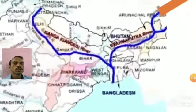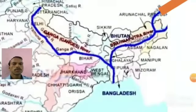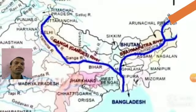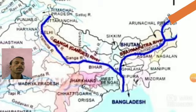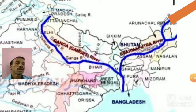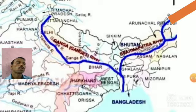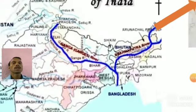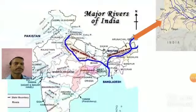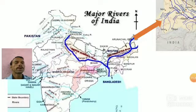The important cities in this region are Allahabad in Uttar Pradesh, Patna in Bihar, and Kolkata in West Bengal. These are some of the major cities situated on the banks of the river Ganga.